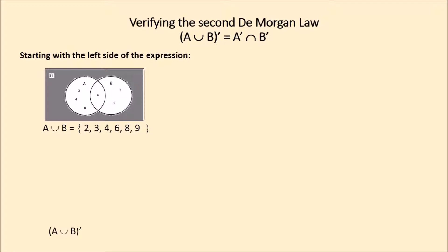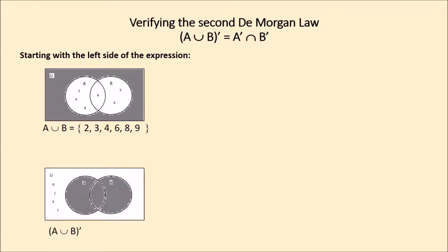Complement of the union of subsets A and B: the Venn diagram shows the numbers that are not in the union of both subsets. The numbers that can be read are 0, 1, 5, 7.